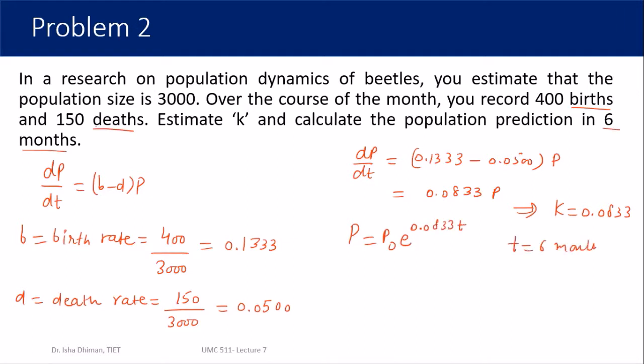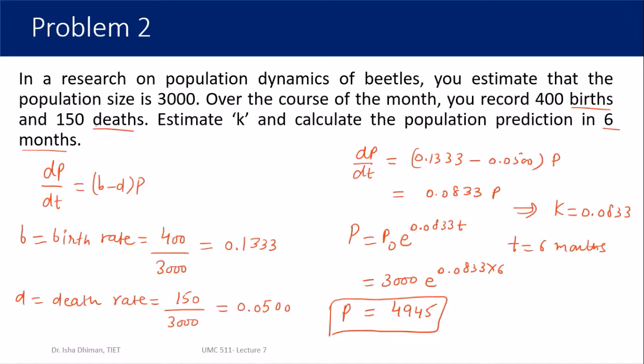The model gives dp/dt = (b - d)·p = 0.0833·p, so k = 0.0833. To calculate the population in 6 months, we use the exponential growth solution: p = p0·e^(kt). With p0 = 3000 and t = 6 months, we get p ≈ 4945. Although the question statement was phrased differently, we ultimately used the exponential growth model — most real-life scenarios map to one of the seven models we've studied.